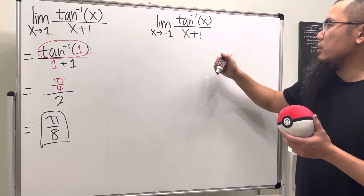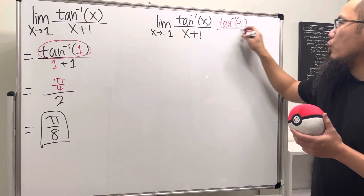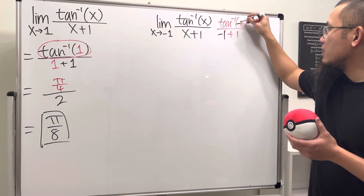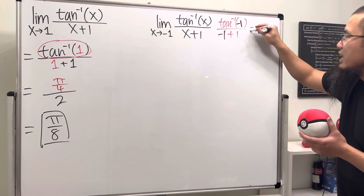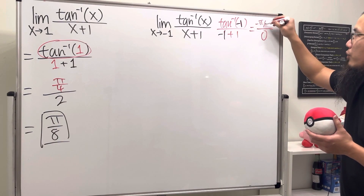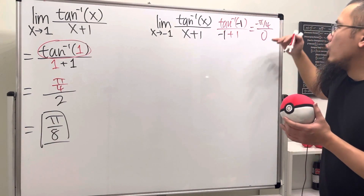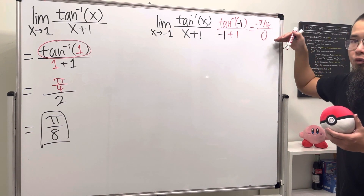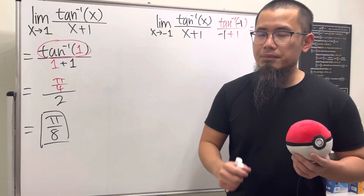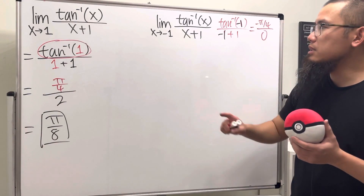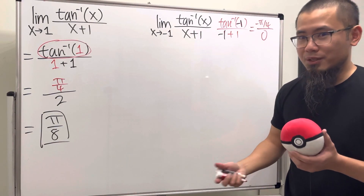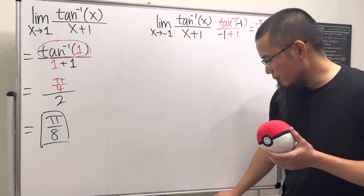Plugging in negative one gives us inverse tangent of negative one over negative one plus one. We end up with zero on the bottom. The numerator, inverse tangent of negative one, is negative π/4 — a non-zero number over zero. So the result is either positive or negative infinity, but since we don't know the direction, we have to check both one-sided limits.